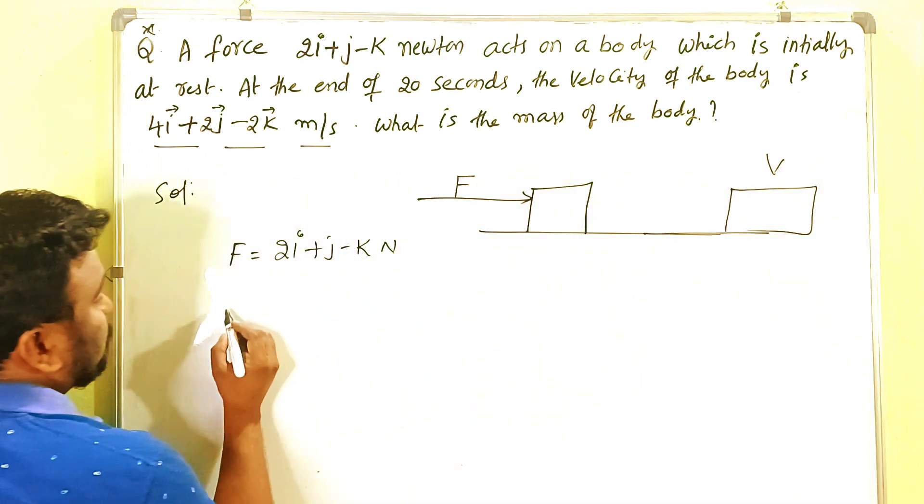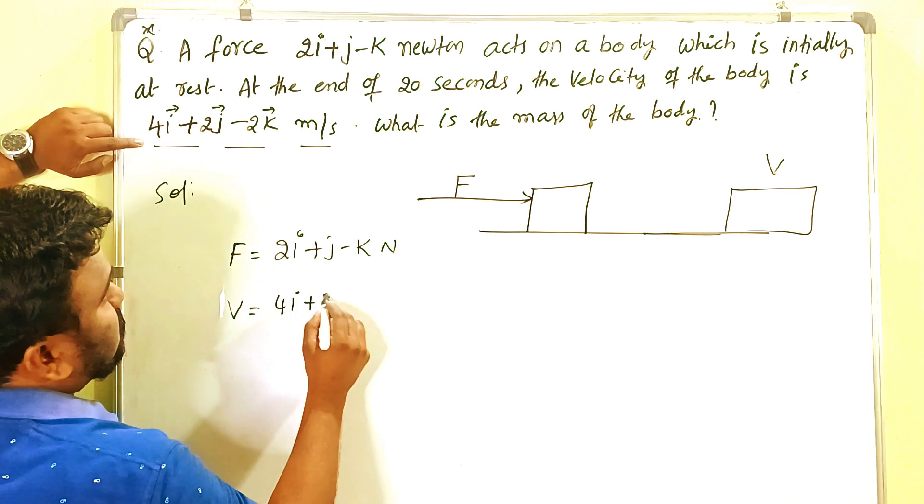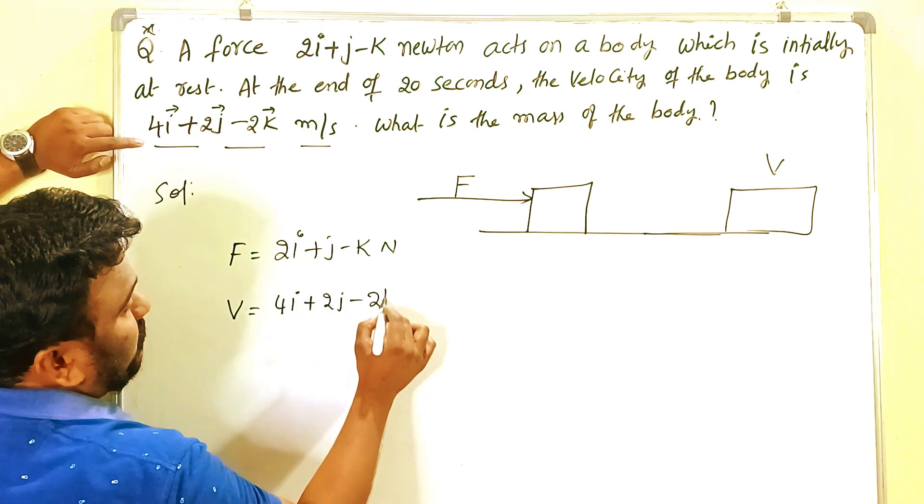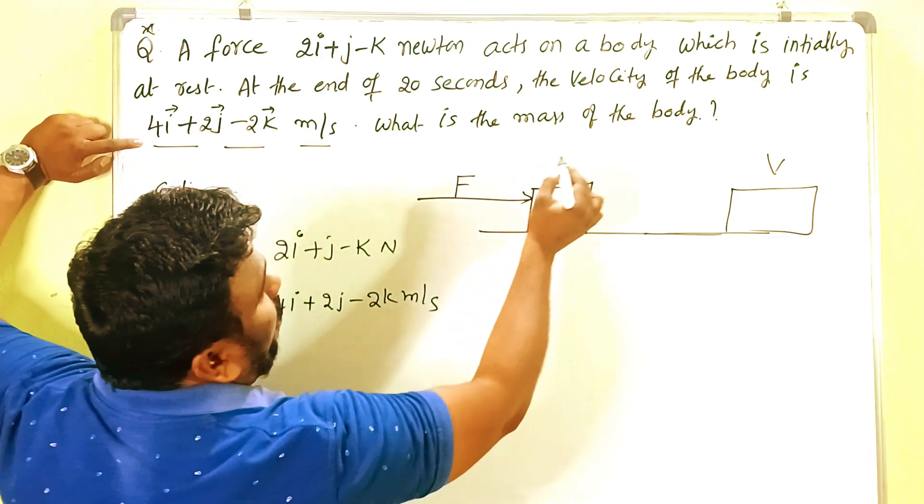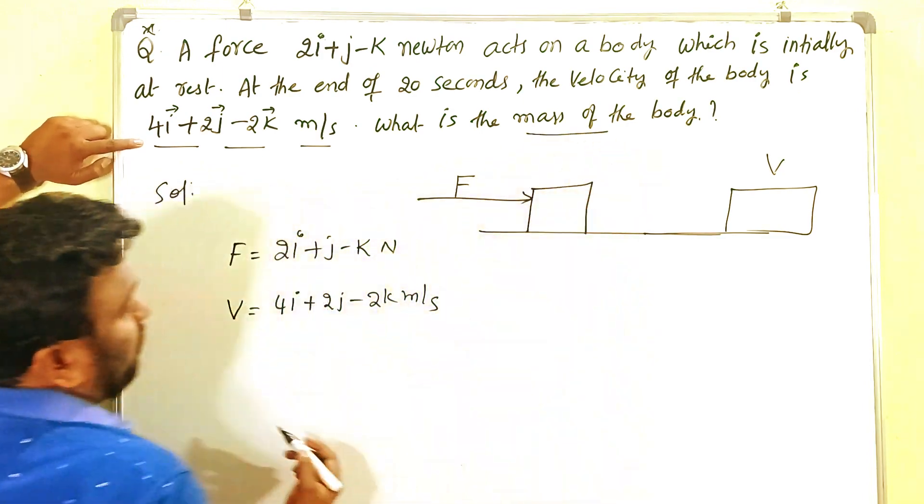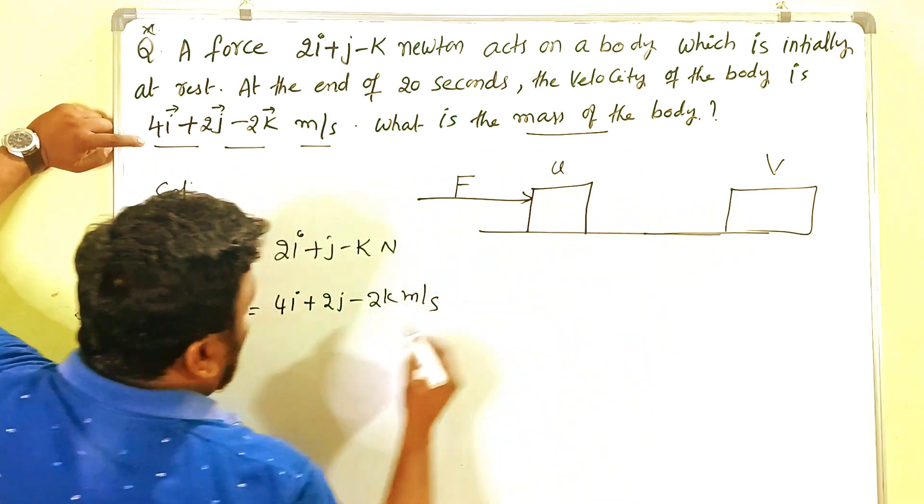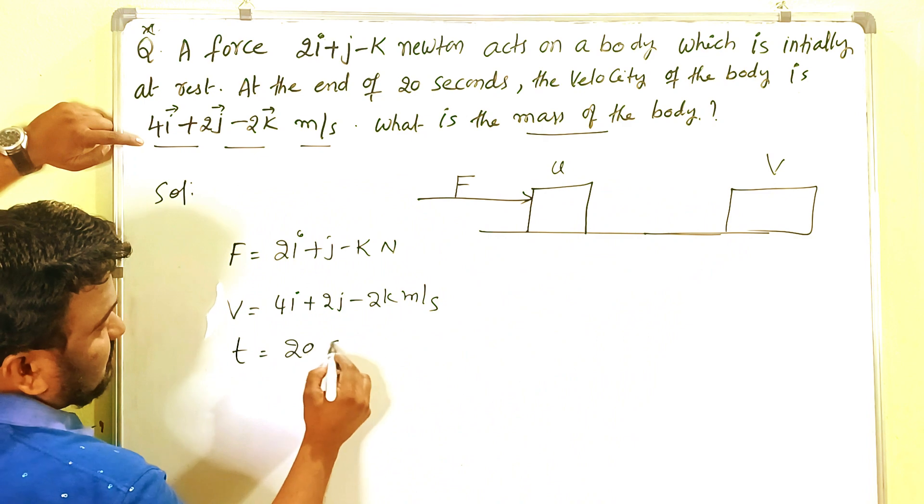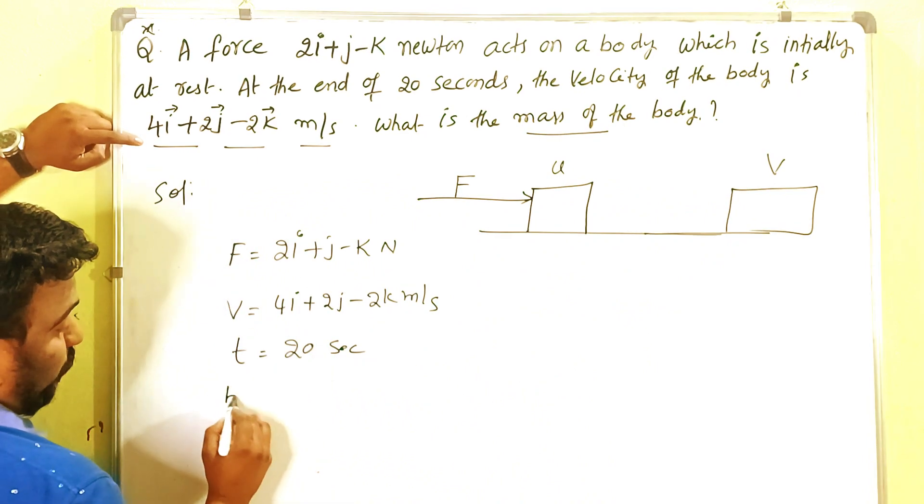That velocity is 4i plus 2j minus 2k meters per second. What you have to find out is the mass of the body. To convert the velocity from U to V, the time given is 20 seconds.